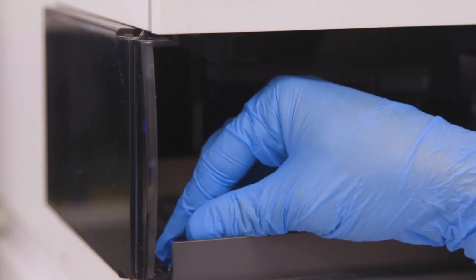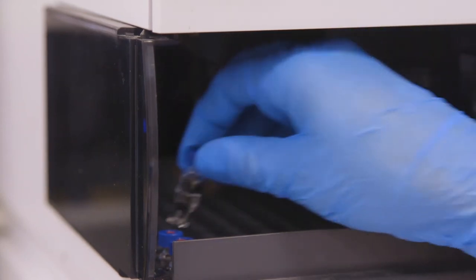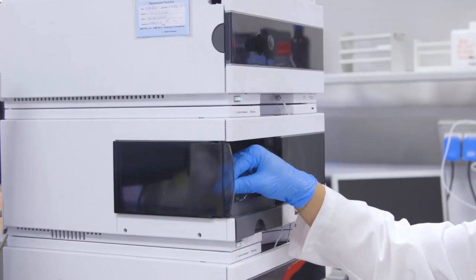Following this we place the vials in the autosampler tray starting from the calibrator, continuing with the controls and samples, and starting the sequence. The chromatographic run time is five minutes and for our sequence of seven samples all results will be obtained after 50 minutes of instrument work including the injections of the calibrator and the two controls.